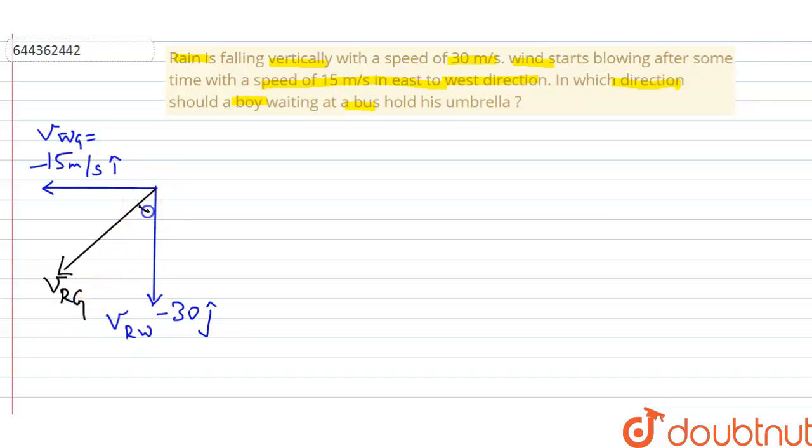So let us suppose that this is an angle theta. So this is the resultant vrg, that is the rain with respect to the ground or the boy waiting at the bus.